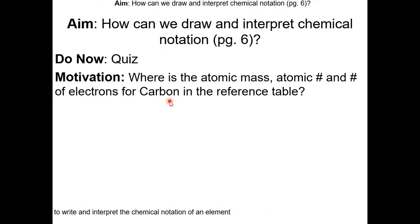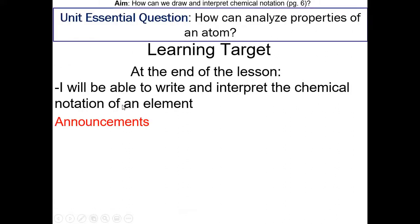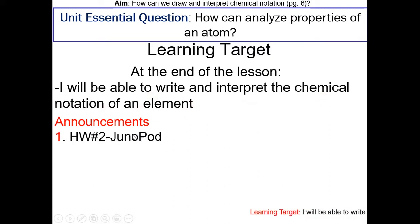If you have done it, you will have found this information on the periodic table. Learning target: at the end of the lesson, I'll be able to write and interpret the chemical notation of an element. For announcements, just do homework number two, which is a JunoPod.